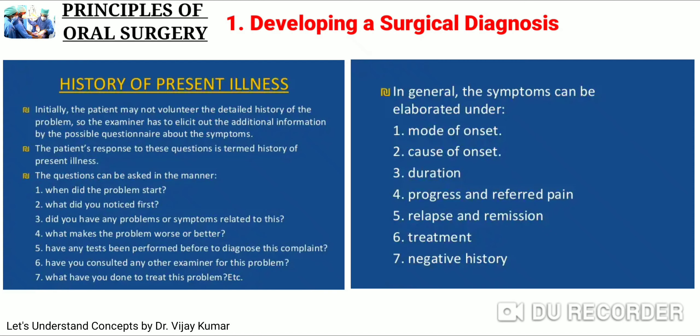HOPI: the patient may not volunteer detailed history, so the examiner must elicit additional information through questionnaires about symptoms — asking when the problem started, what was noticed first, any related symptoms, what makes it worse or better, any prior tests performed, whether another examiner was consulted, and what treatment has been tried. Symptoms are elaborated under mode of onset, cause of onset, duration, progress, referred pain, relapse and remission, treatment, and negative history.